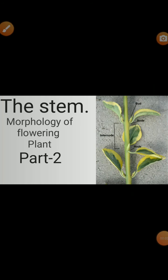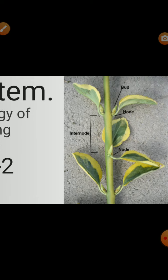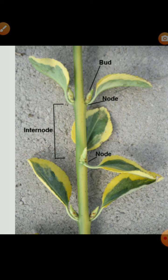Hello students, today I talk about the topic related to Class 11, Chapter 5, Morphology of a Flowering Plant. Here I explain about the stem — this is Part 2 of morphology of flowering plants. In the first part I explained about the root. The stem is the greenish part at the earlier phase present in a plant, but at old age the stem contains brown color or woody structure. The stem is a part of the shoot system.